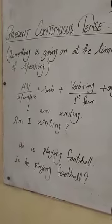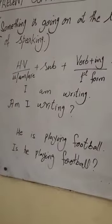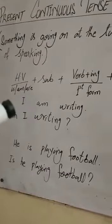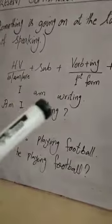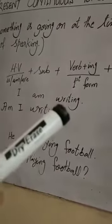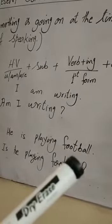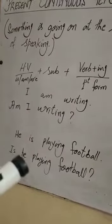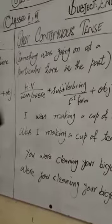اب بات کرتے ہیں interrogative sentences کی — یعنی وہ sentences جن میں question کیا جاتا ہے۔ اس میں ہم کیا کرتے ہیں؟ اپنا helping verb پہلے لے آتے ہیں یعنی subject سے پہلے۔ I am writing — اس کا interrogative ہوگا: Am I writing? He is playing football — interrogative: Is he playing football? دیکھیے دونوں میں helping verb کو subject سے پہلے لے آئے ہیں۔